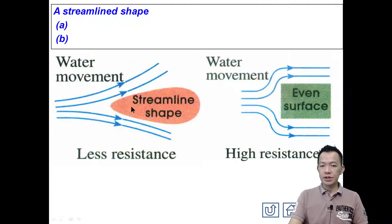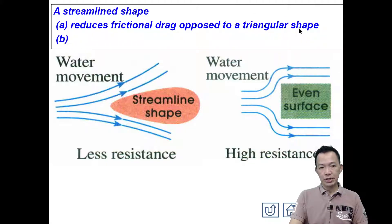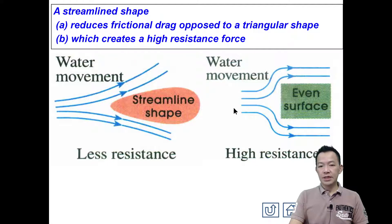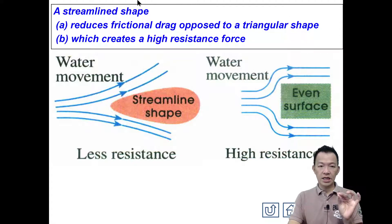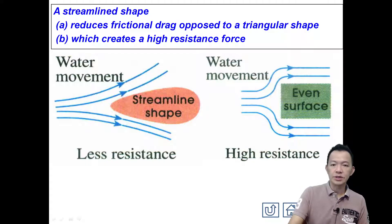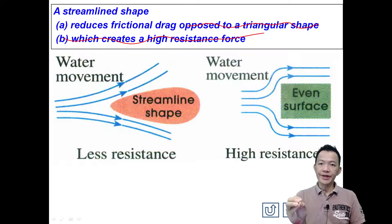So, copy this under your notes: the streamline shape reduces the frictional drag in the water. As opposed to a triangular shape, a non-streamline surface would create a very high resistance force. So the streamline shape reduces the frictional drag in the water — that's all you need to write. Sorry for the extra complexity, I was following the book.